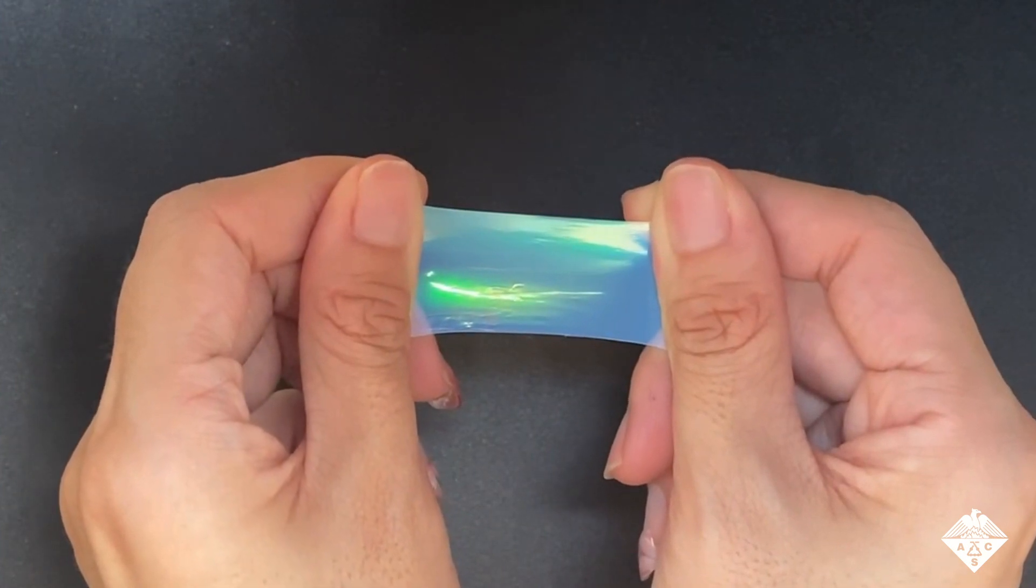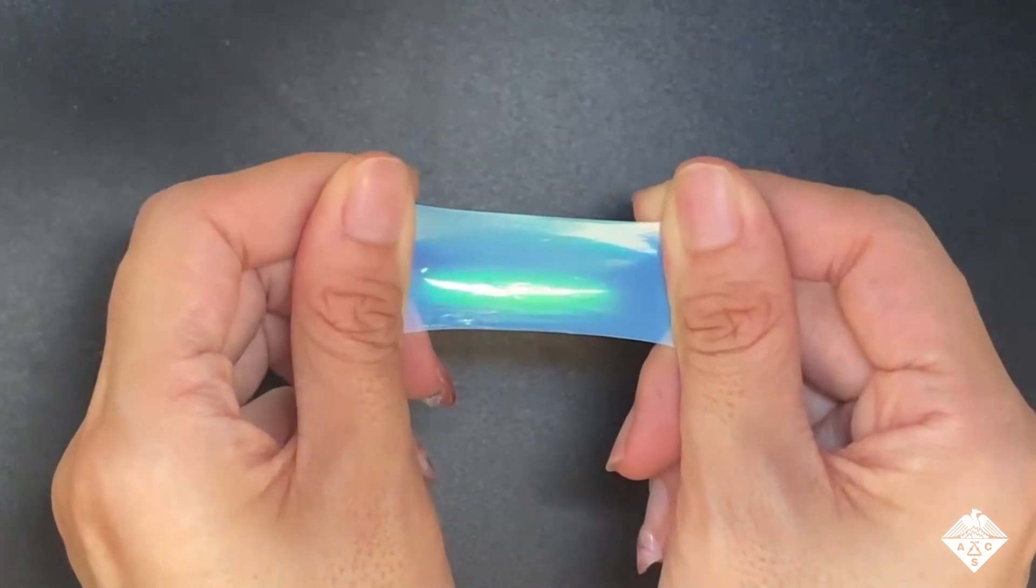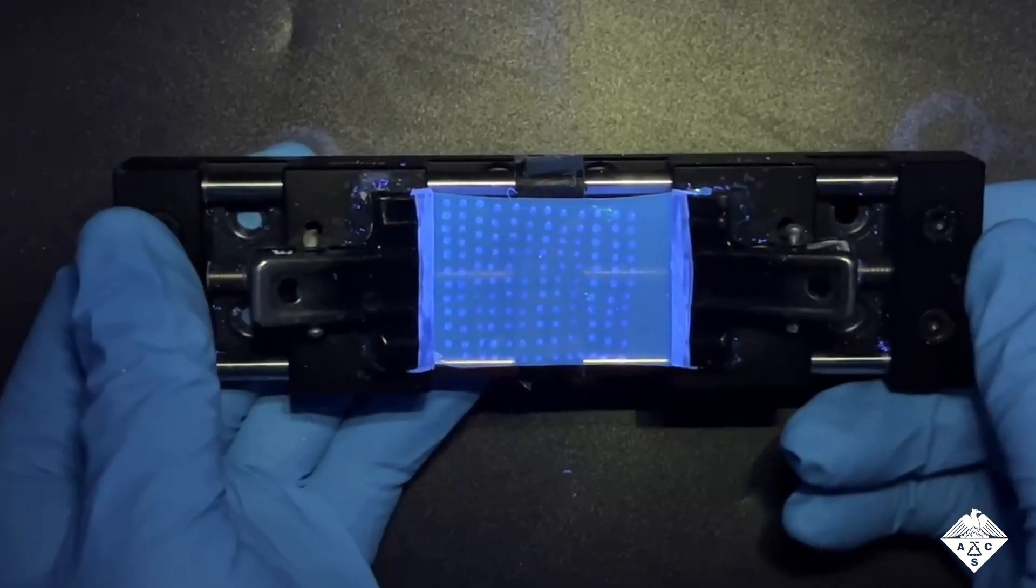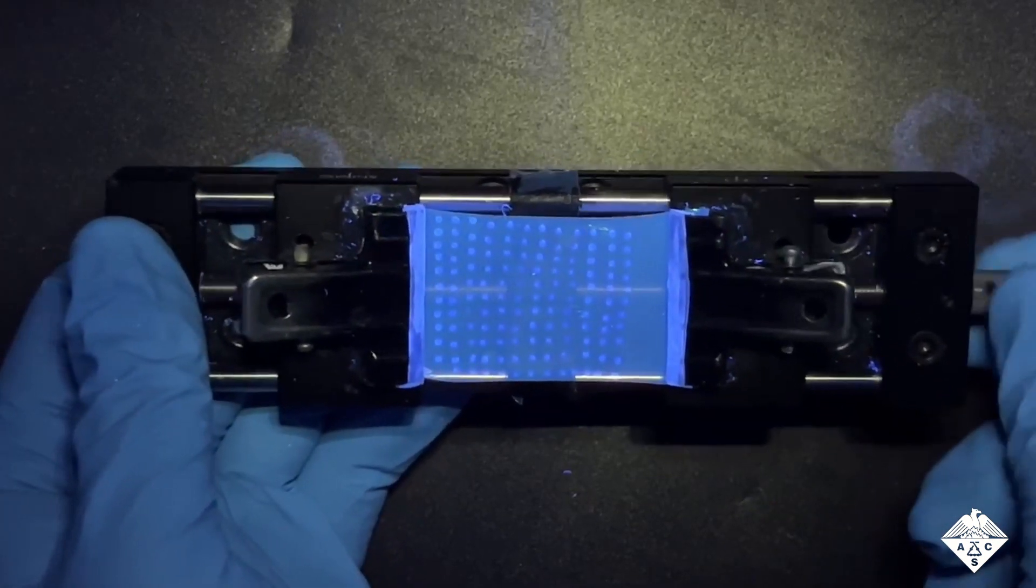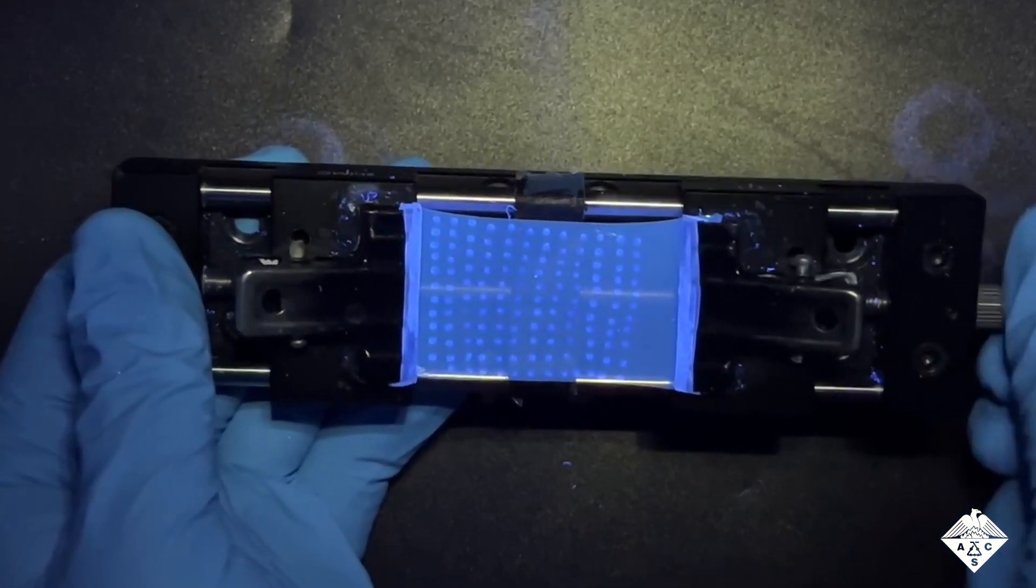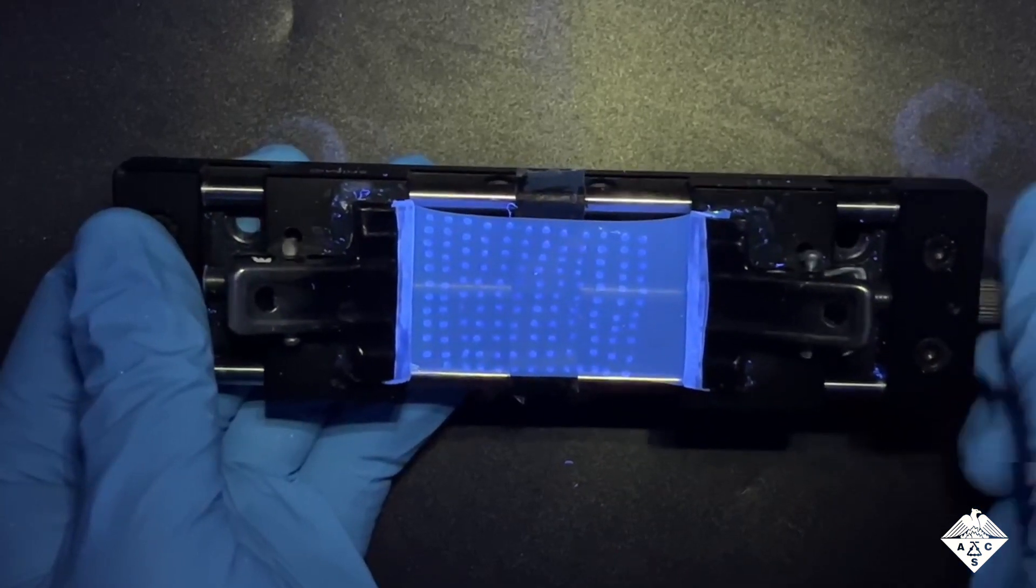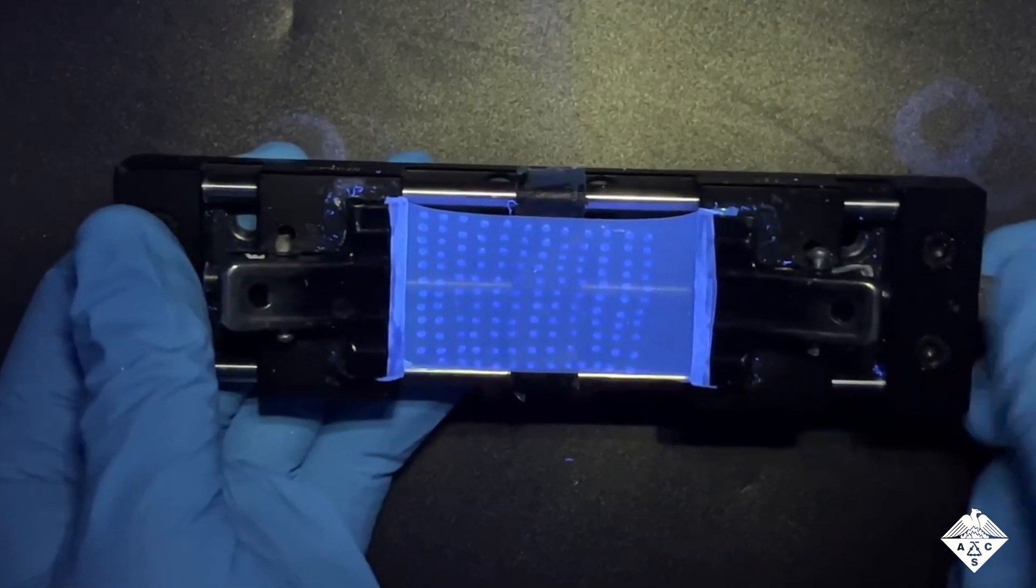Here, the material displays multiple colors when stretched by hand. It does more than just look pretty, though. When it's evenly stretched, the film enhances the unique fluorescence intensities of sugar molecules that are tagged with a fluorescent dye.